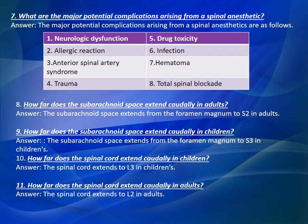Question Number 8: How far does the subarachnoid space extend caudally in adults? Answer: The subarachnoid space extends from the foramen magnum to S3 in adults. Question Number 9: How far does the subarachnoid space extend caudally in children? Answer: The subarachnoid space extends from the foramen magnum to S3 in children.